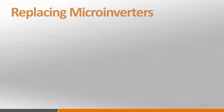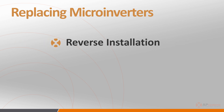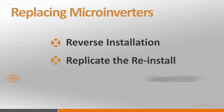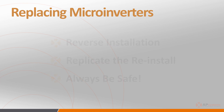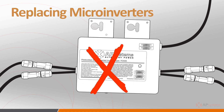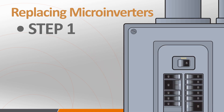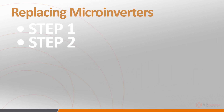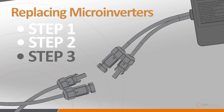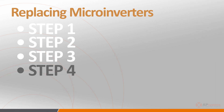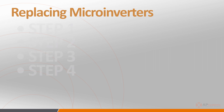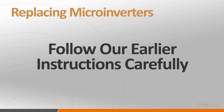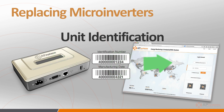Replacing microinverters is as simple as reversing the installation process for removal and replicating it for reinstallation, with a few extra safety steps. First, de-energize the AC branch circuit by turning off the branch circuit breaker. Then disconnect the AC connectors to the adjacent inverters, disconnect the DC connectors from the PV modules, and physically remove the inverter from the rack. Follow the installation procedures covered earlier to install the replacement inverter, making sure to update the inverter UIDs in the ECU and EMA to the replacement inverter.